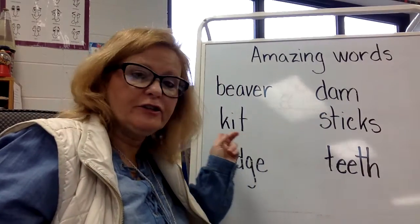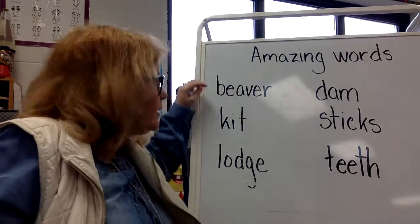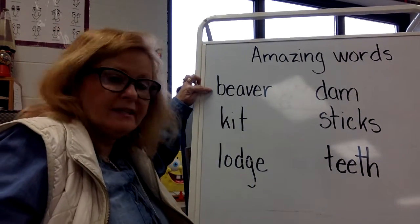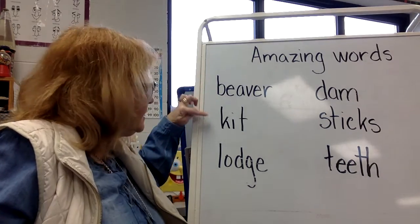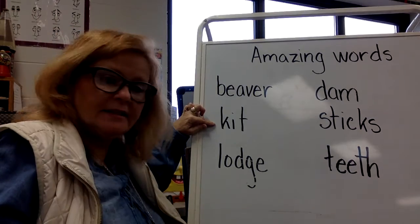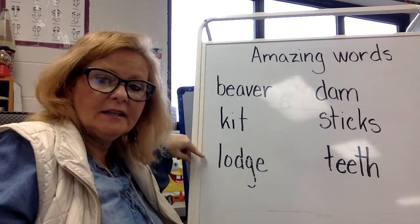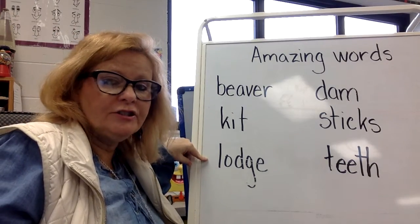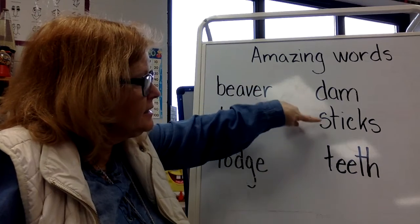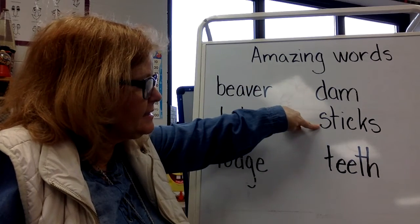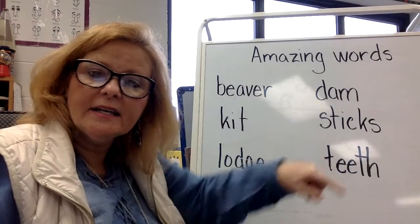I've wrote them on the chart here. The first one is beaver, kit, lodge, dam, sticks, and teeth.